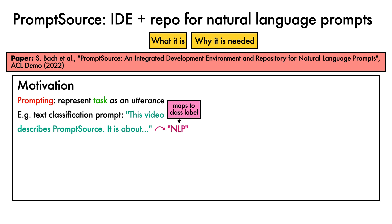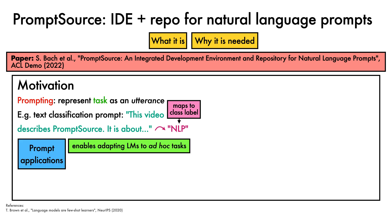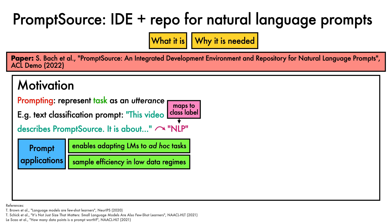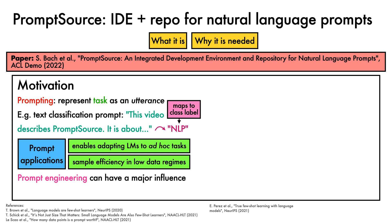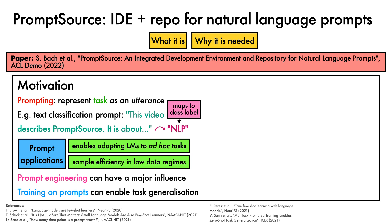Prompting is receiving considerable interest in NLP, partly for its applications in enabling the adaptation of language models to ad hoc tasks, and its encouraging sample efficiency for fine-tuning in low-data regimes. Prompt engineering can have a major influence on task performance, especially in zero-shot tasks. It has also been shown that training on diverse collections of prompts can enable zero-shot task generalisation.